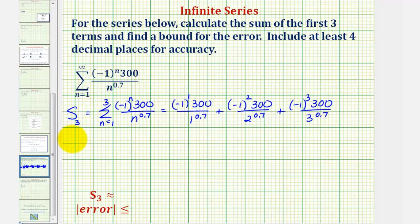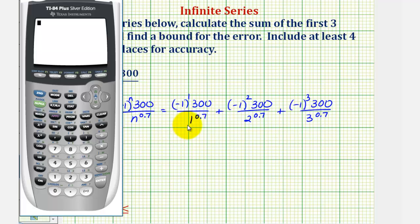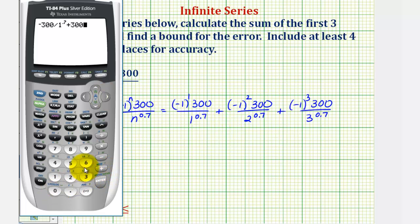Now we'll go to the calculator to get our decimal approximation for this partial sum. Notice how this first term would be negative, so we'll enter negative 300 divided by one raised to the power of 0.7. Notice how the second term is positive, so we have plus 300 divided by two raised to the power of 0.7.